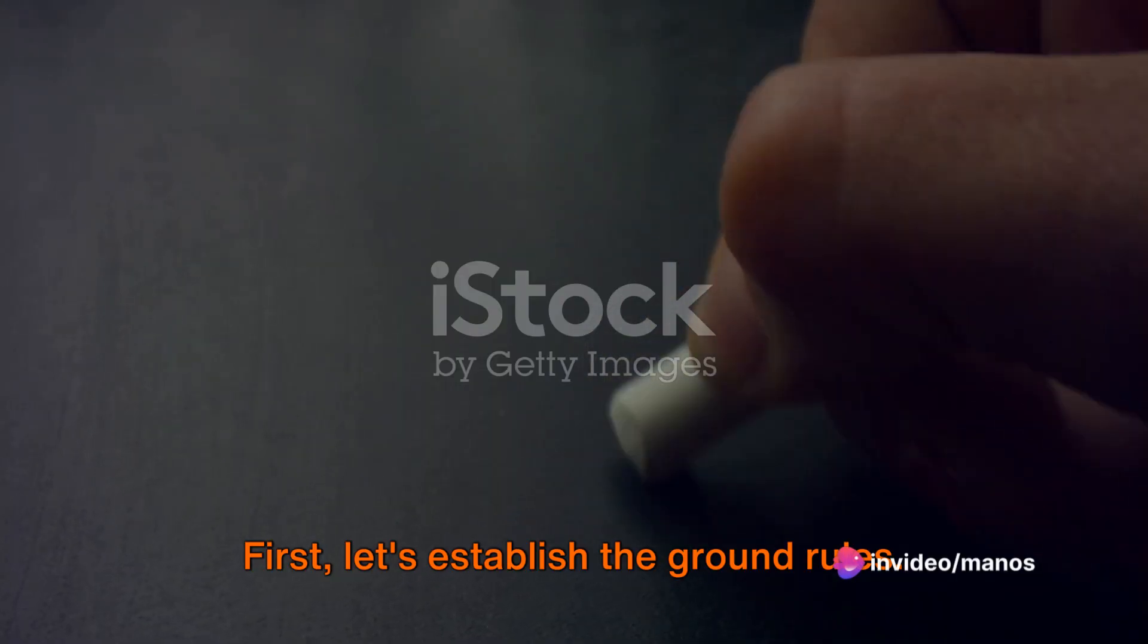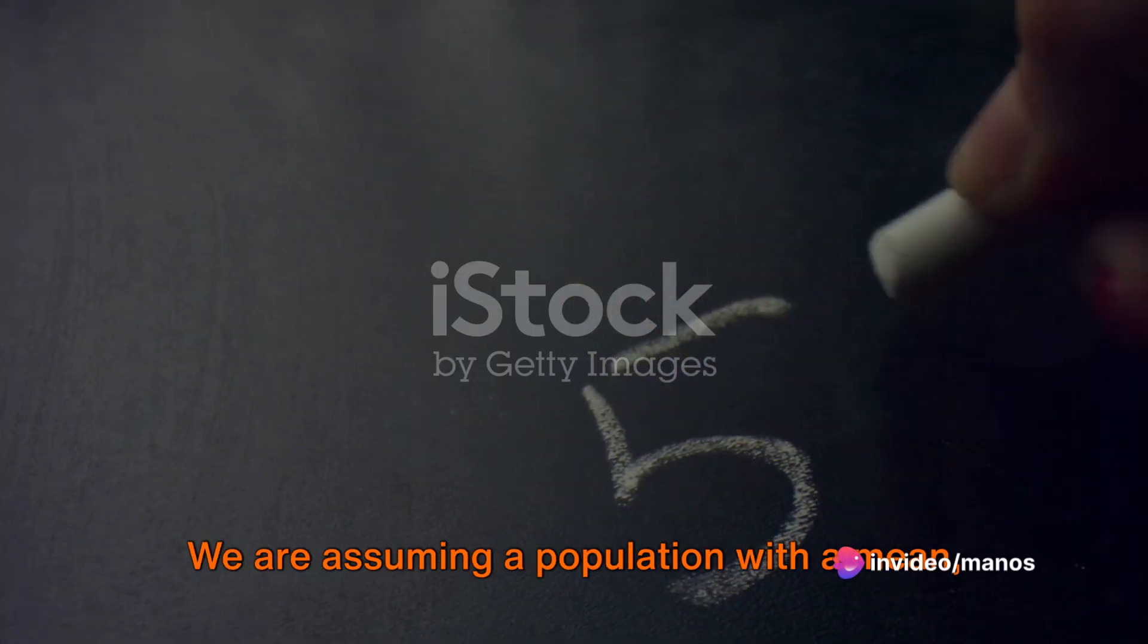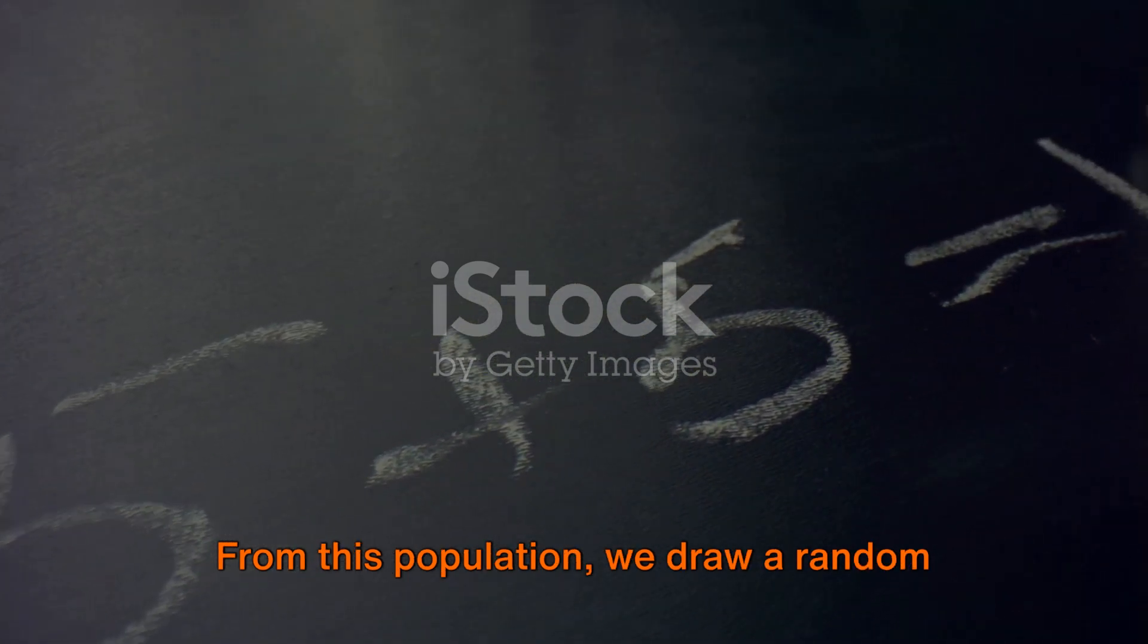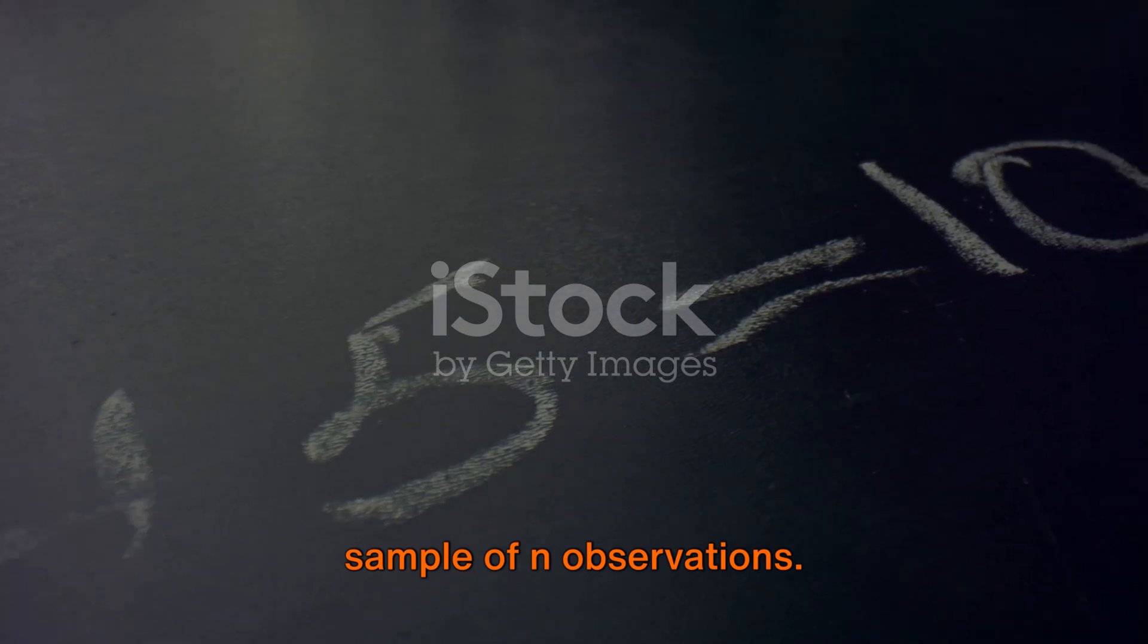First, let's establish the ground rules. We are assuming a population with a mean represented by the Greek letter mu. From this population we draw a random sample of n observations.